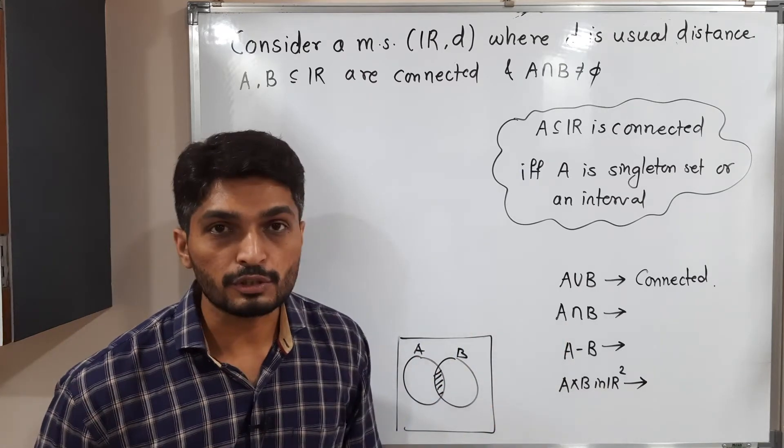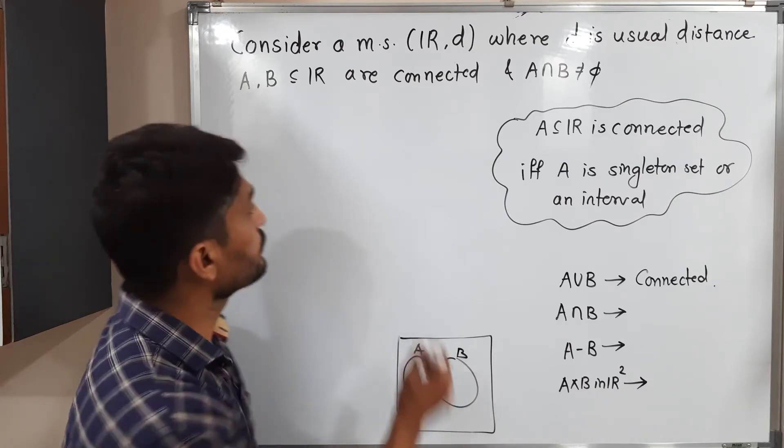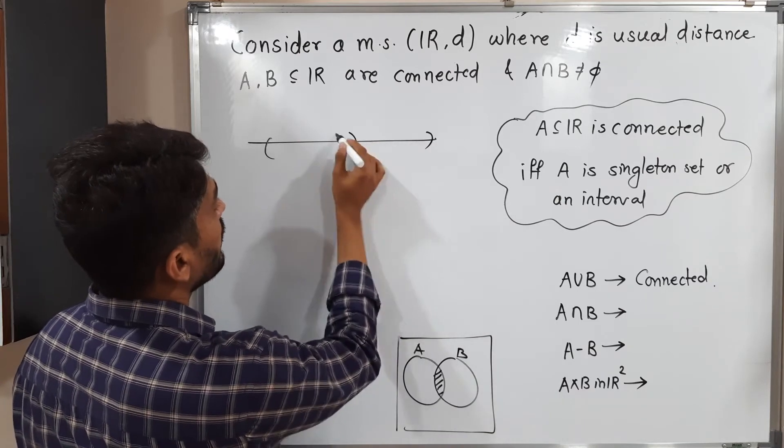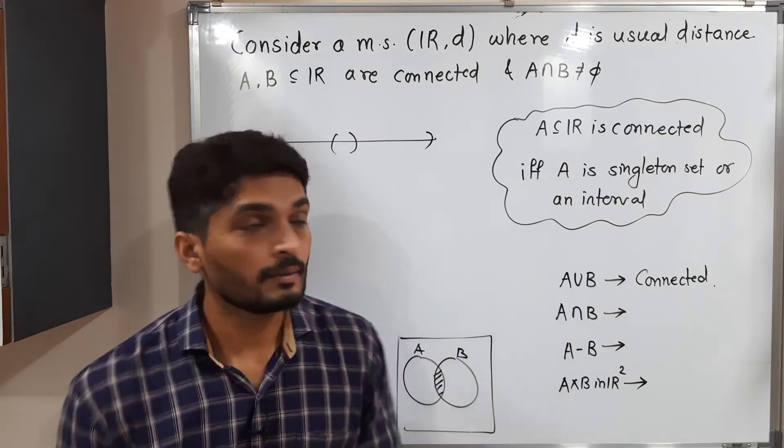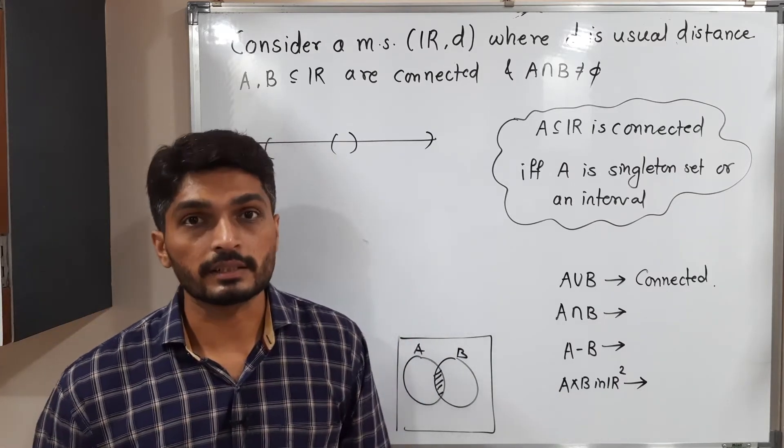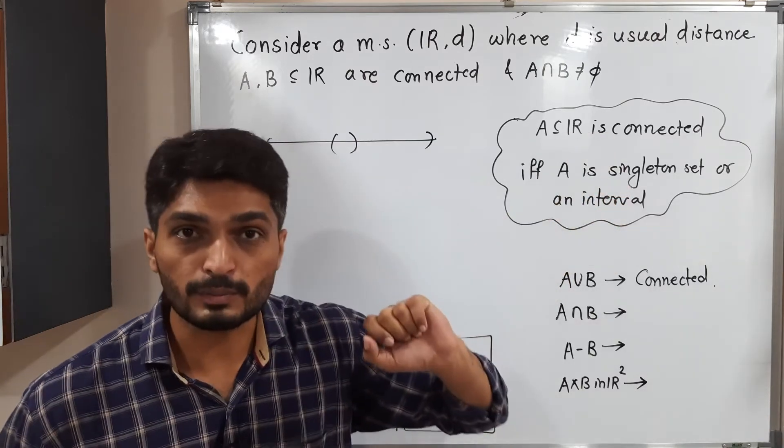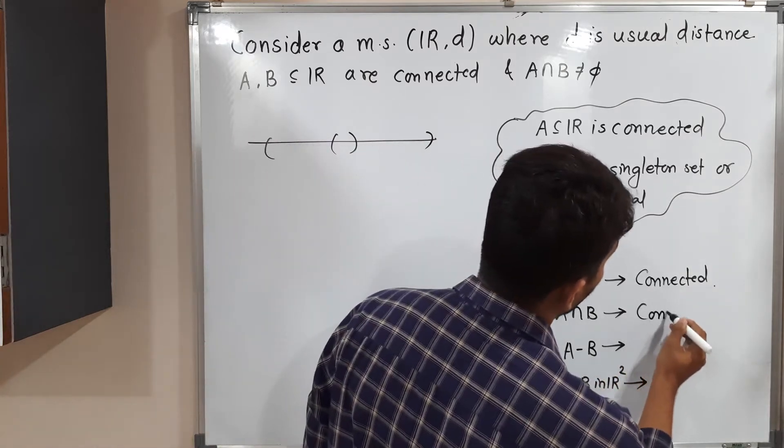Let us talk about A intersection B. A and B are connected subsets of R. Therefore, they are intervals or singleton sets and intersecting intervals. That means intersection is not equal to empty. So the intersection is obviously again an interval or singleton set. Every interval and singleton set are connected subsets of R. That's why A intersection B is connected.